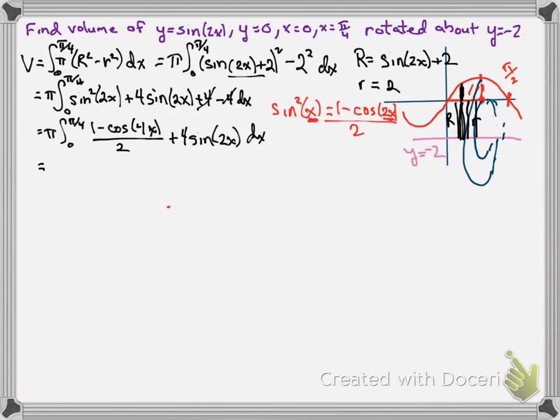This is what we have to evaluate to get this volume. Now what I'm going to do, because I don't want to deal with fractions here, I'm going to pull that out front and write this as pi over 2. Now that's great for this first one because it was 1 minus cosine of 4x, but I do have to take into consideration that this is also now had a half factored out. So this becomes plus 8 sine of 2x dx.